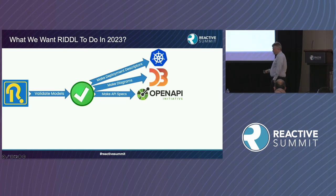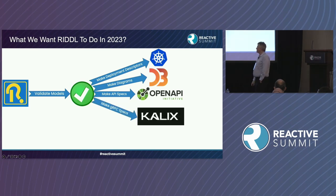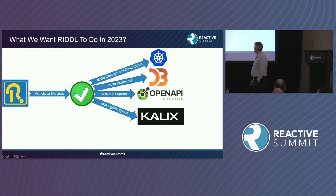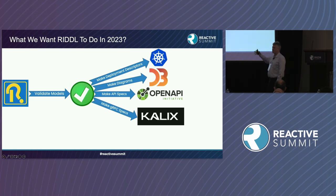Also planned: making API specs, since there are implied APIs within the domain model, so I plan to generate OpenAPI specs from that. Kalix also seems to be one of the great targets for what we can generate from a RIDDLE specification. It won't generate everything — it's not going to generate the business logic — but it can generate all the infrastructural stuff, including the gRPC definitions of services that Kalix uses.